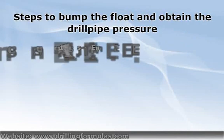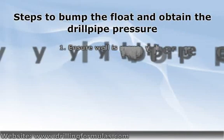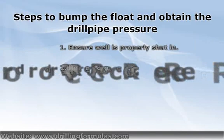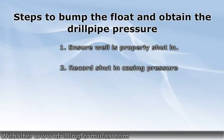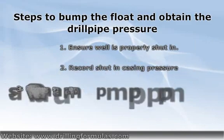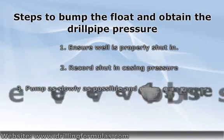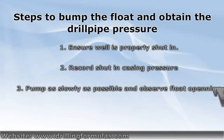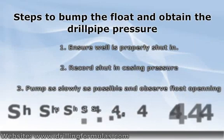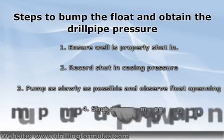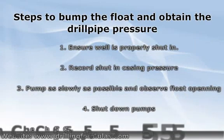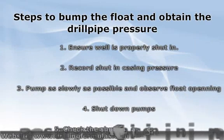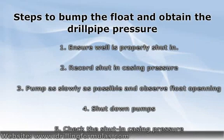Step 1: Ensure the well is properly shut-in with no leaks. Step 2: Record the shut-in casing pressure. Step 3: Pump as slowly as possible — pump speed of 5 to 10 strokes per minute at a constant pumping speed down into the drill pipe, and keep monitoring the drill pipe pressure and the casing pressure.